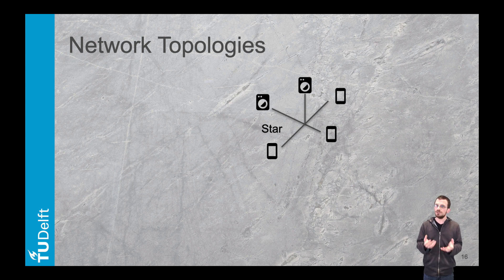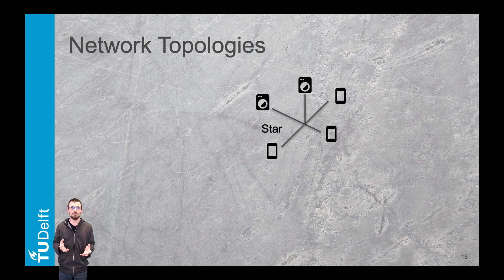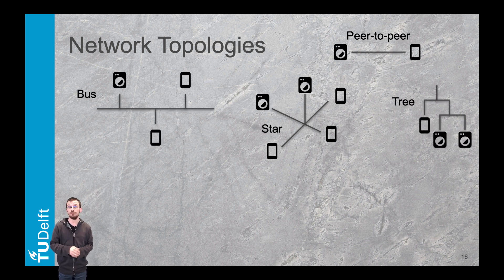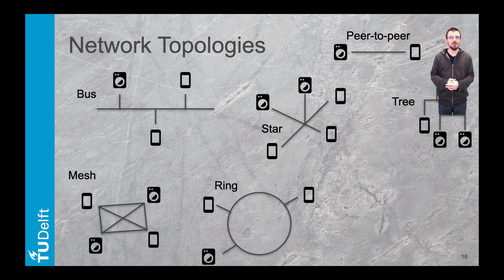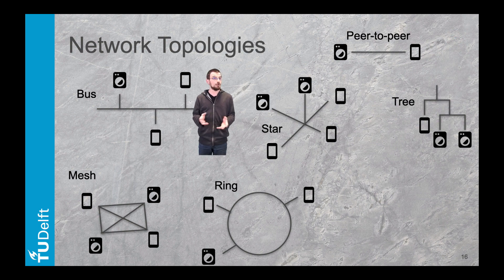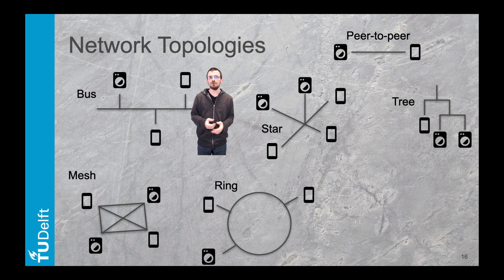The star topology is typical for a home internet-enabled environment. However, there are other network topologies for connected products you might encounter: peer-to-peer, bus, or even mesh. With peer-to-peer, all devices communicate via a direct link. On a bus topology, all devices connect to a common wire — the bus.